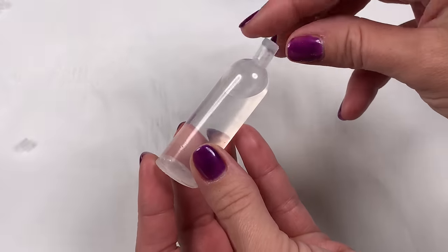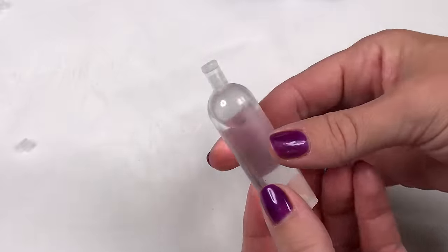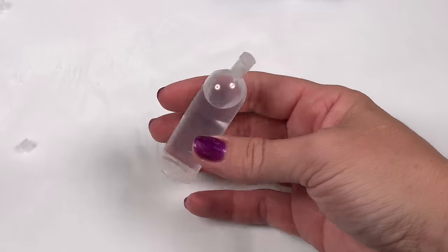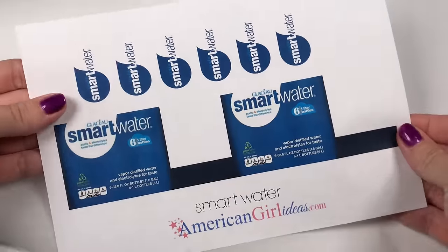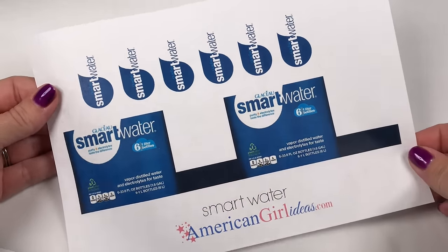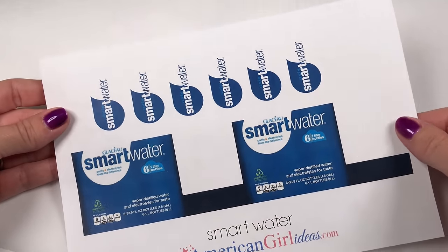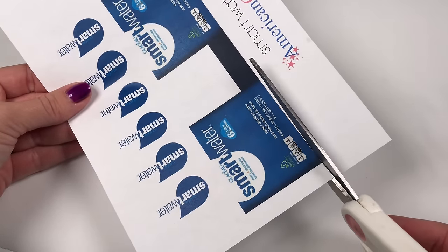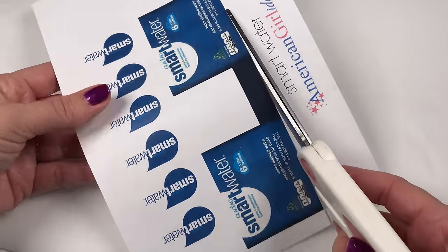You can stop right here, or you can take it one step further to cover it with a label. I'm using these smart water bottle printables from our blog at americangirlideas.com. You can cut out the package label and the individual bottle labels.